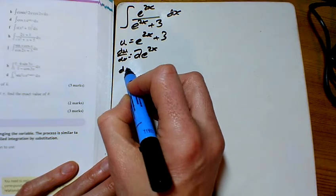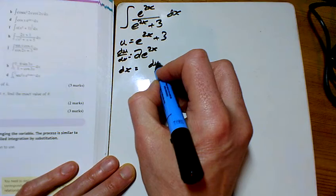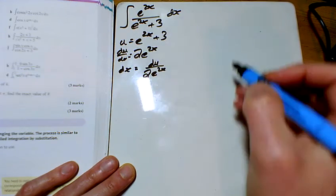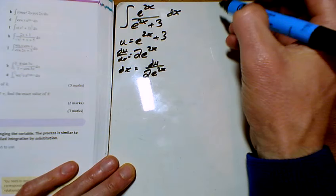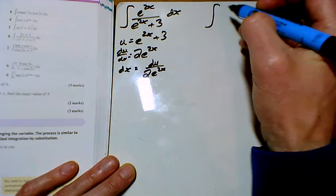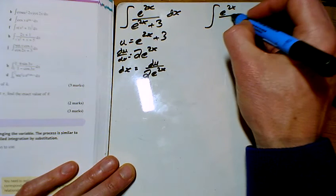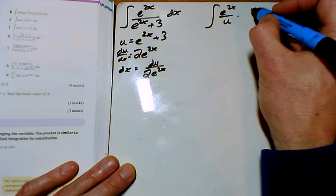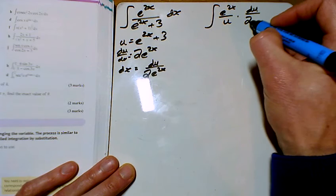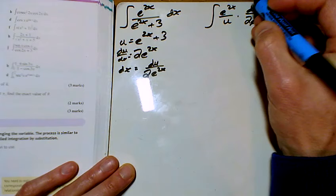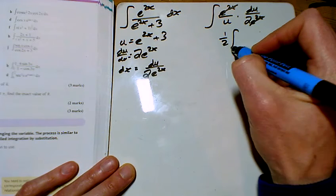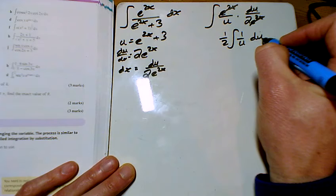That means dx equals du over 2e to the 2x, and those e to the 2x are going to cancel out. So we've got e to the 2x over u and du over 2e to the 2x. There they go cancelling, so I've just got a half the integral of 1 over u du.